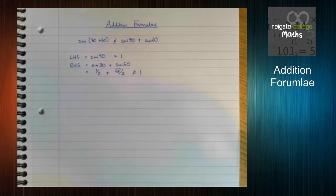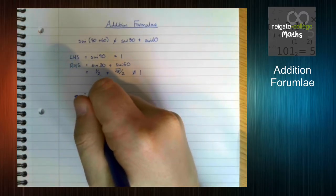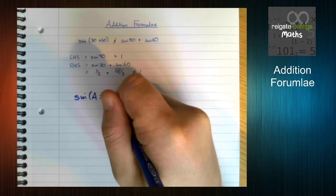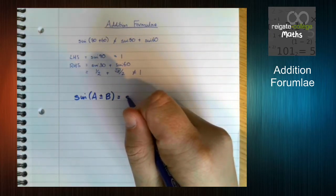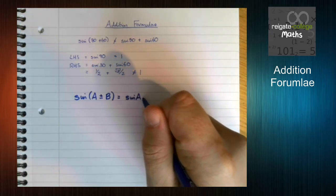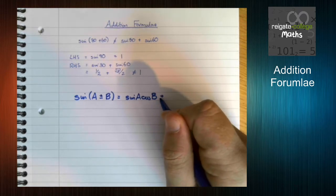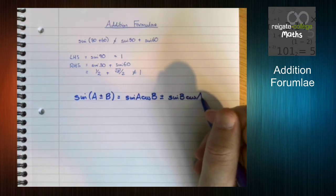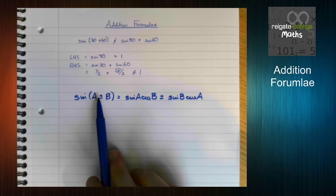So let's start with sine. Let's imagine we've got sine of A plus or minus B. This is equal to sine A cos B plus or minus sine B cos A. This is really important.